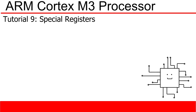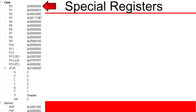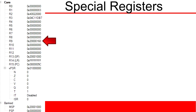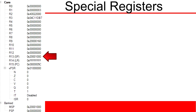Hello, in this tutorial I'm going to be talking about special registers. You may already be familiar with the concept of regular registers, as I spoke about them in a previous video. The regular registers go from R0 to R12, and the special registers consist of R13, R14, R15, and the system flags.